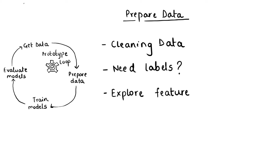Data scientists also look for outliers, missing values, or invalid values in the data set. During the exploratory step, they try to understand relationships between features by plotting them against each other to identify patterns. Part of data exploration also involves identifying new features that better represent the data set — a process known as feature engineering.